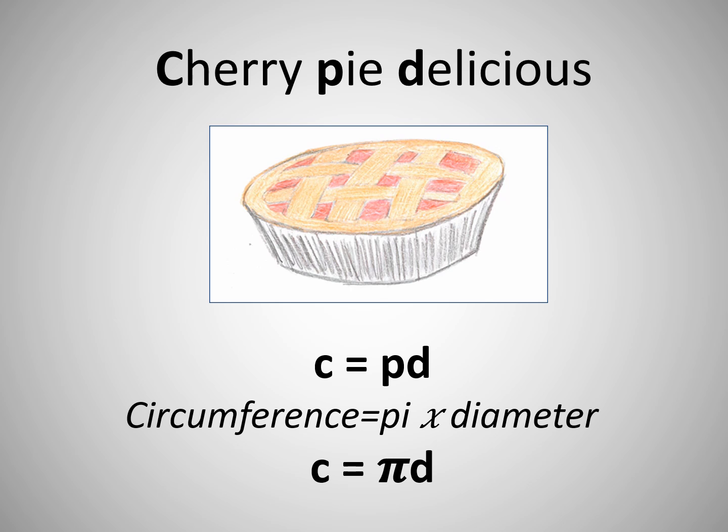C equals πd. Circumference equals pi times diameter. C equals πd.